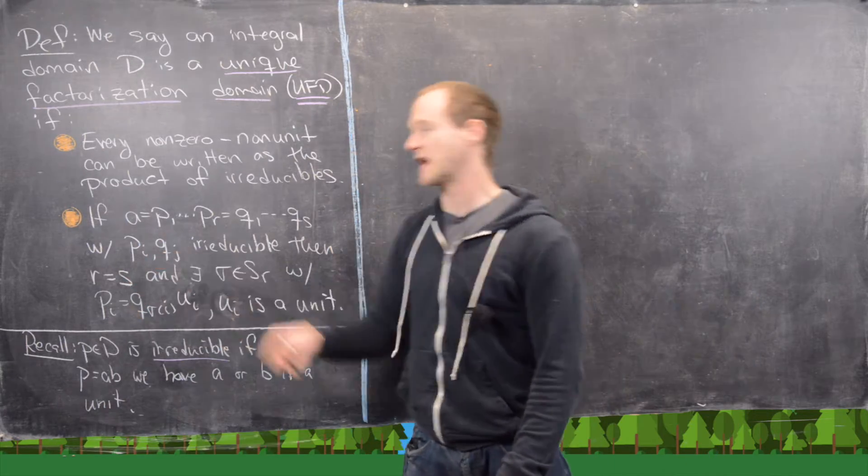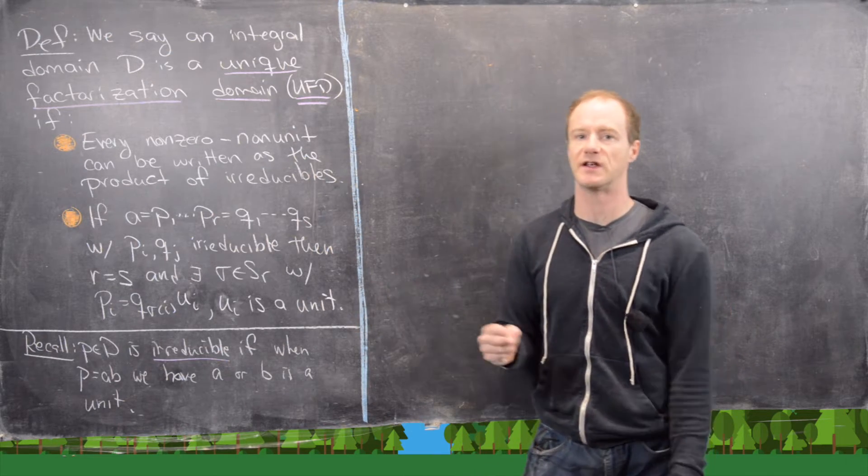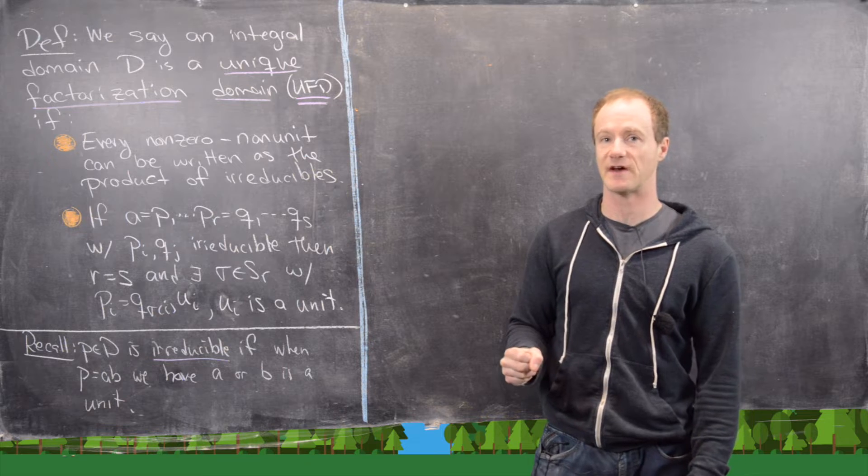First of all, R equals S. So in other words, there's some sort of uniqueness to the number of irreducible elements that something can be factored into.